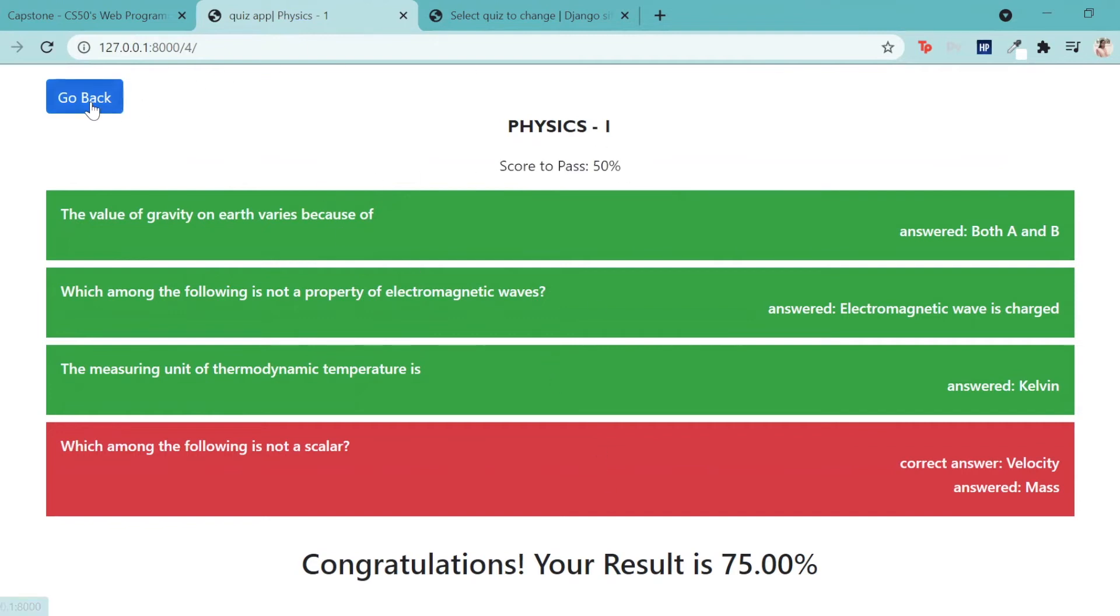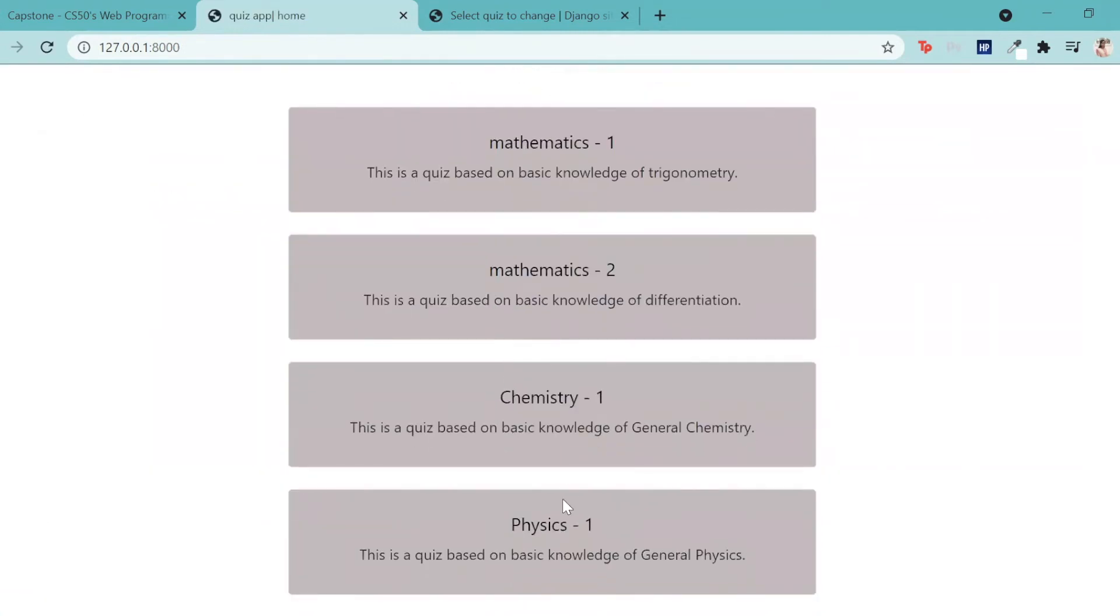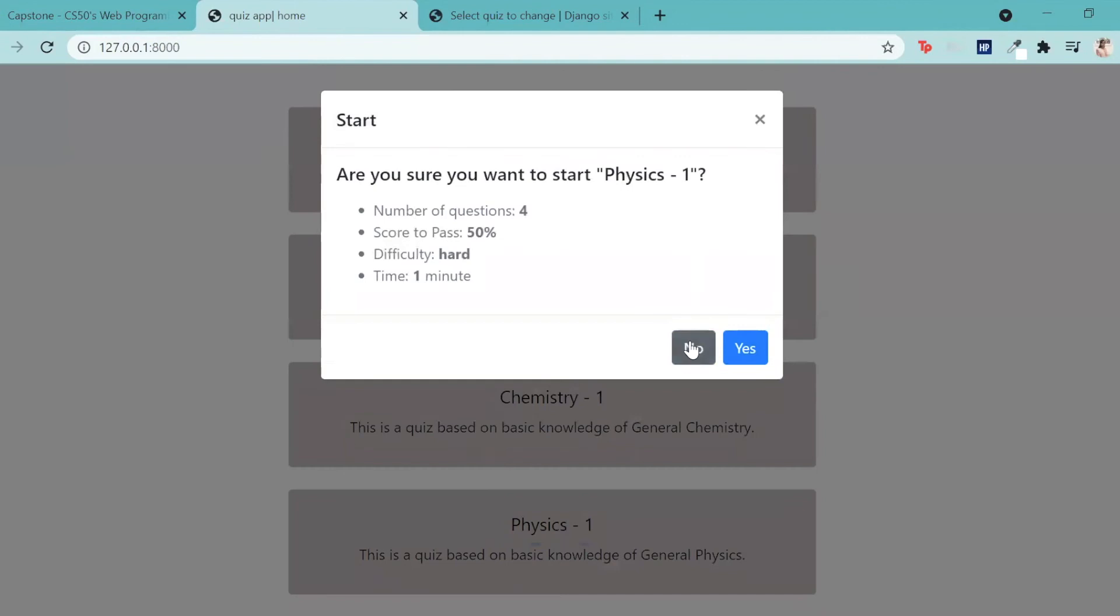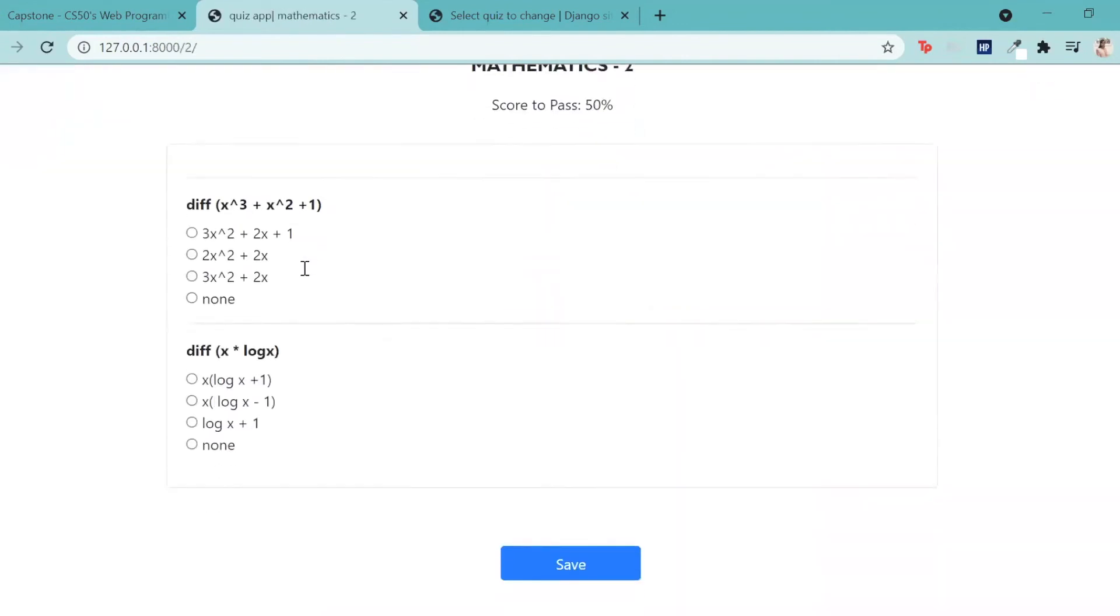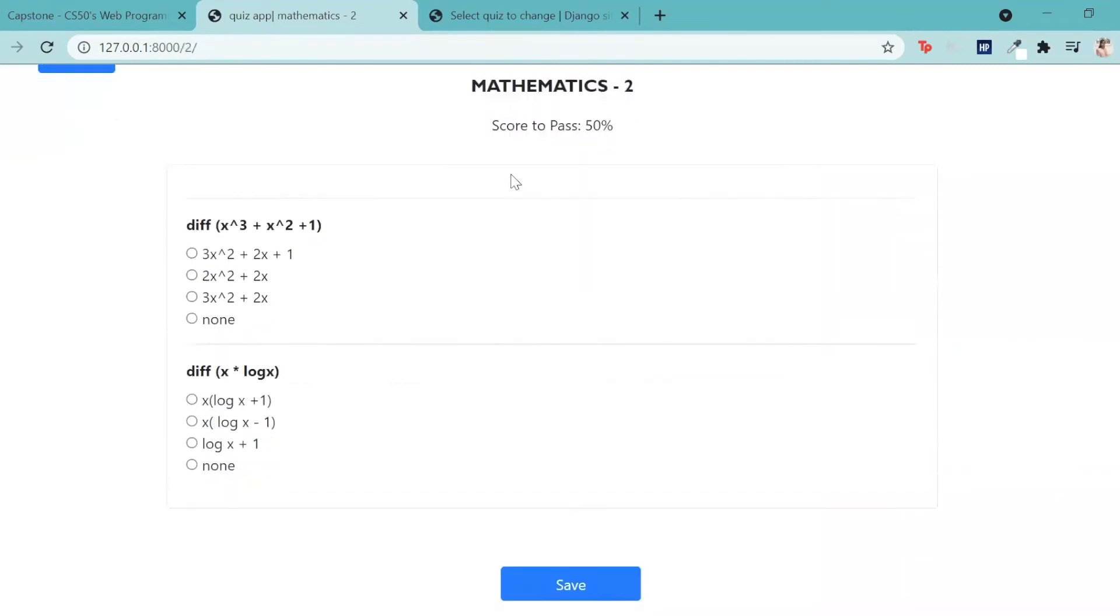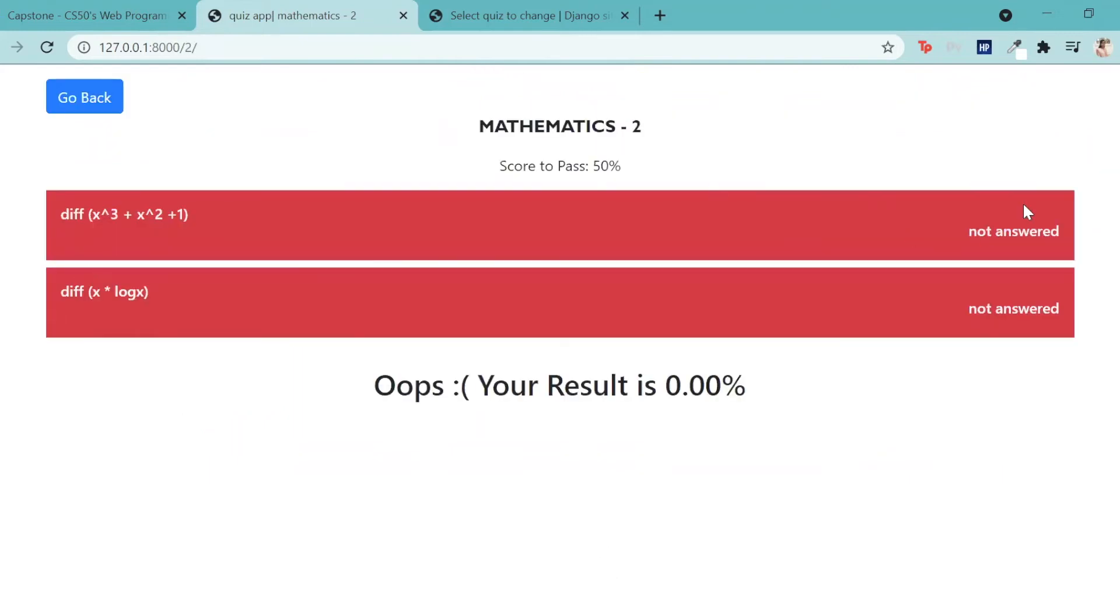I can go back clicking on the go back button and attempt another quiz. Suppose mathematics 2, and this time I do not click on any of these. I leave them unattempted and I go to save. As you can see, it shows me that I have not answered and I have failed the quiz.